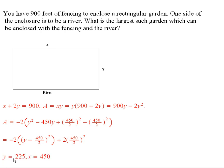So therefore, the maximum value occurs when I make this negative term equal to 0. So that's when y is 225. And if y is equal to 225, then x has to be 450.